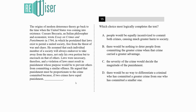He also argued that punishment must be proportionate to the crime committed, because if two crimes have equal punishment, then — take a look at the question: which choice completes the text?